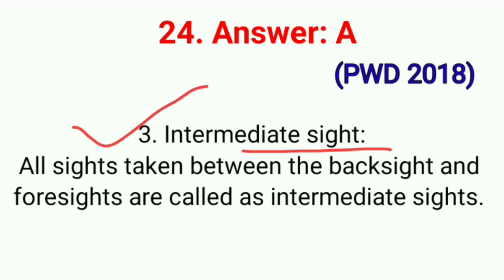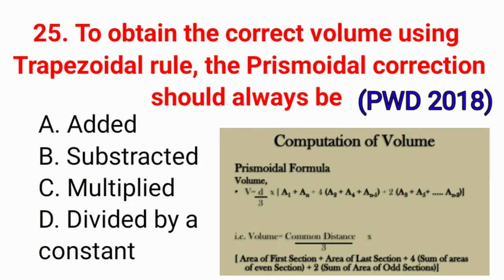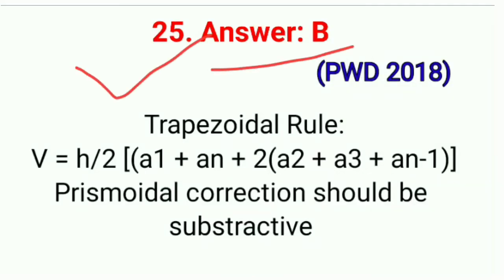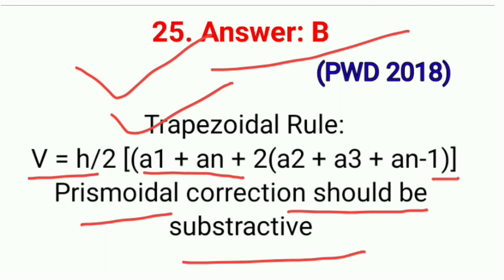Third, Intermediate sight — all sights taken between the backsight and foresight are called intermediate sights. Question No. 25. To obtain the correct volume using trapezoidal rule, the prismoidal correction should always be — correct option B: Subtracted. Trapezoidal formula: V = H/2 × [A₁ + Aₙ + 2(A₂ + A₃ + ... + Aₙ₋₁)]. Prismoidal correction should be subtractive. Correct option B.